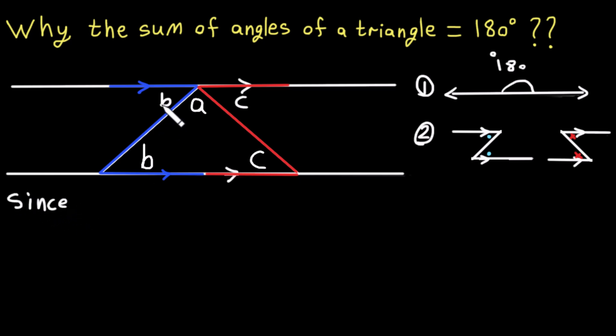So b plus a plus c equals 180 degrees. The whole angle at the straight line is equal to 180 degrees.